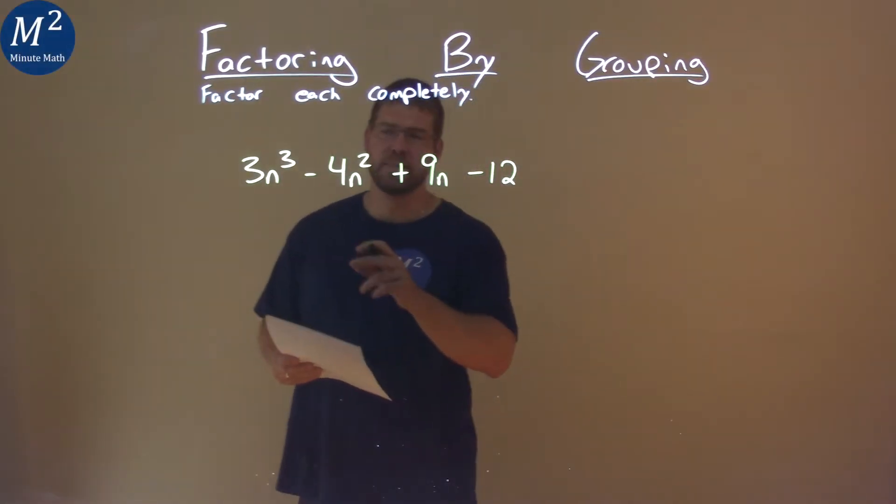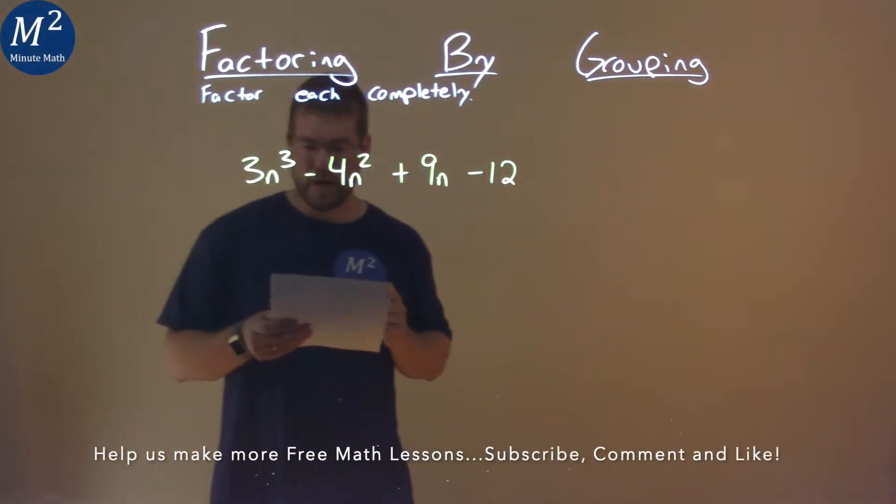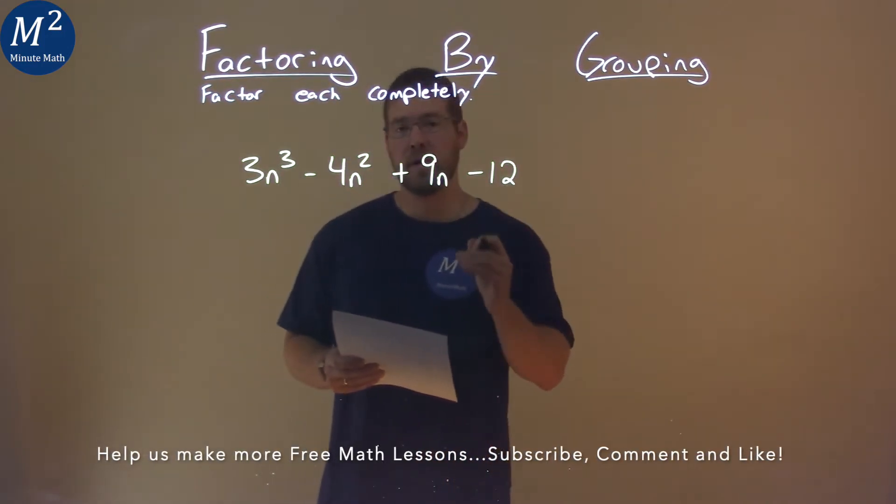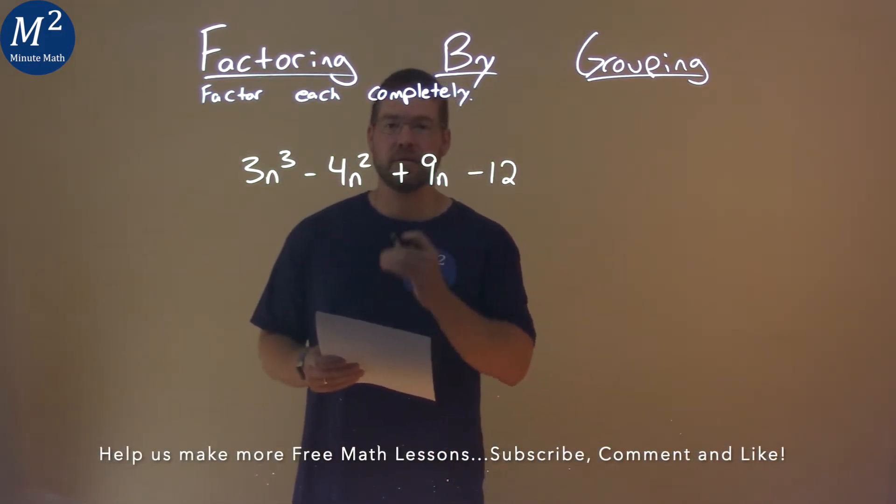We're given this problem right here, 3n to the third power minus 4n squared plus 9n minus 12, and we need to factor this completely.